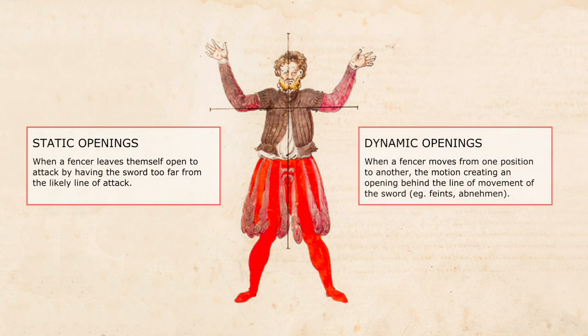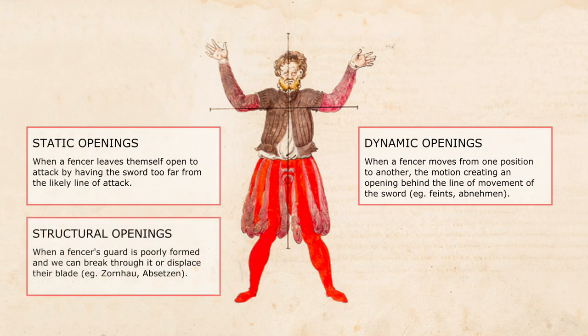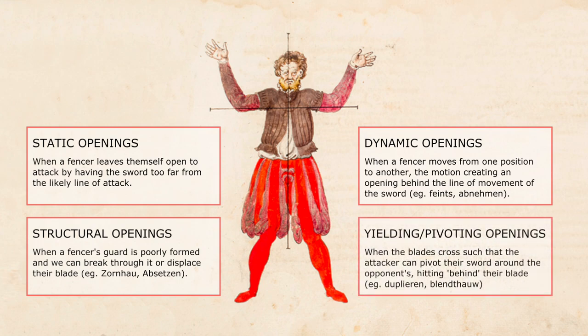The second category are dynamic openings — this is where the fencer is moving their weapon from one position to another, and that motion and momentum creates an opening behind the weapon as they move it. The next category is structural openings, where their guard has been poorly formed and so is susceptible to a powerful attack or an attack at the correct angle. Our final category are yielding or pivoting attacks — this is when our blades are crossed in such a way that as an attacker, I can pivot my blade around theirs and cut them behind their own weapon. We see this in Duplerin or in the blind strike.